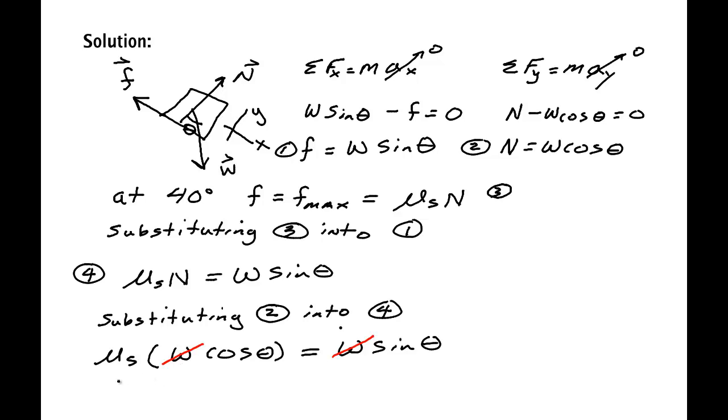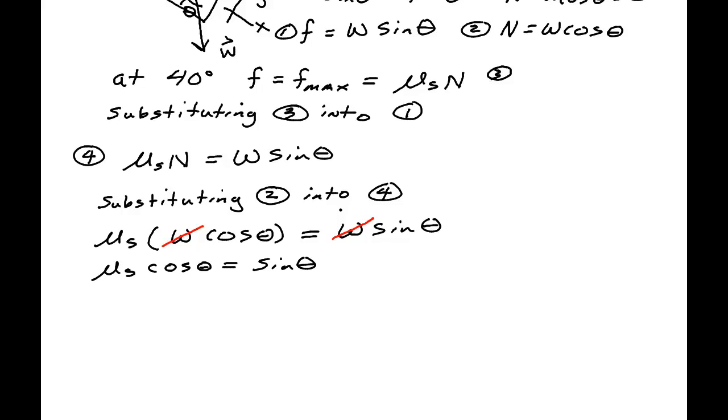We see that we can divide both sides by W, assuming that the weight is not zero, assuming that you actually have a problem. We have mu_s cosine theta equals sine theta, so mu_s is sine theta over cosine theta, which means it's the tangent of theta.